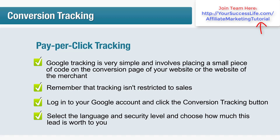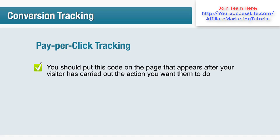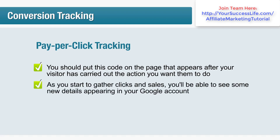Next, select the language and security level and choose how much this lead is worth to you — that is, how much commission you earn on a sale. Grab the tracking code by copying it to your clipboard, then put this code on the page that appears after your visitor has carried out the action you want. If you wish to track sales, you'll need to ask the product merchant to paste your Google AdWords code into their thank you page. As you start to gather clicks and sales, you'll see new details in your Google account: cost, conversion rate, cost per conversion and conversions, which you can drill down to view at either the ad group or keyword level.